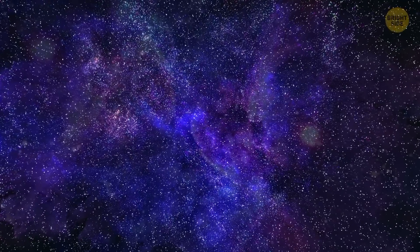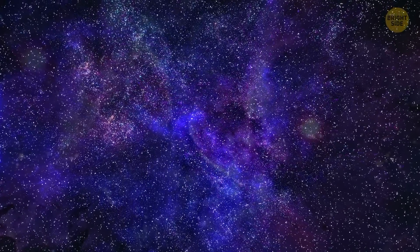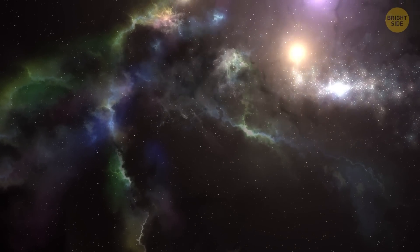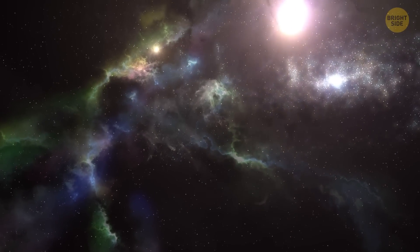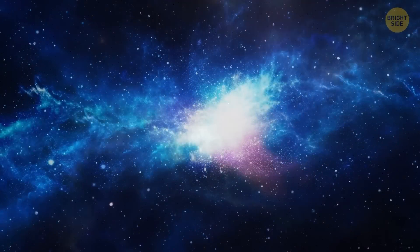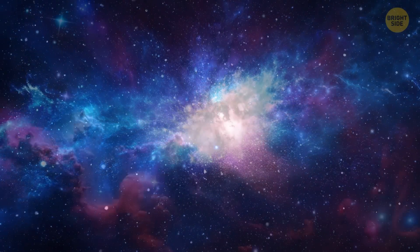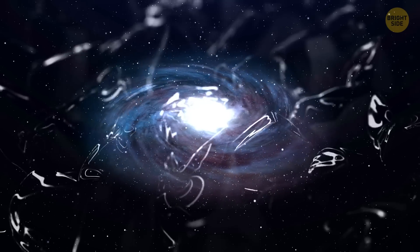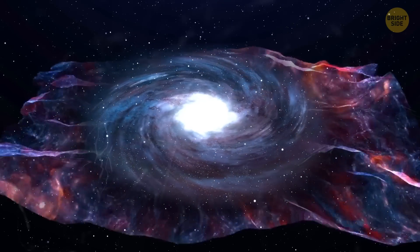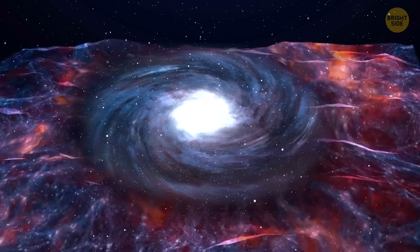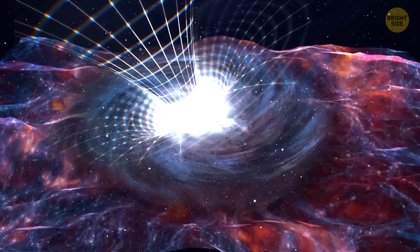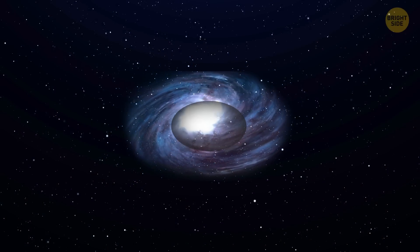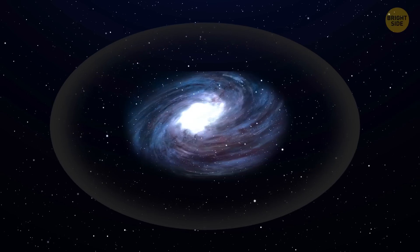In between the spiral arms, there are vast regions of empty space, known as interstellar space. Here, you can find wispy clouds of gas and dust, as well as some of the most spectacular sights in the galaxy, like massive star-forming regions and colorful nebulas. The Milky Way is also surrounded by a huge halo of dark matter, a mysterious substance that we can't see, but can feel its gravitational effects on the galaxy. This halo helps to hold the galaxy together, and it extends out much farther than the visible parts of the Milky Way.